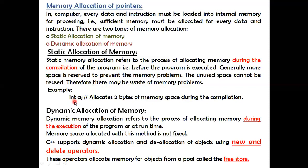There may be a waste of memory in static allocation. In the example, variable 'a' of type integer allocates two bytes of memory space during compilation time — as I said, based on data type: integer is two bytes, float four bytes, double eight bytes. Static memory allocation is fixed and cannot be changed.